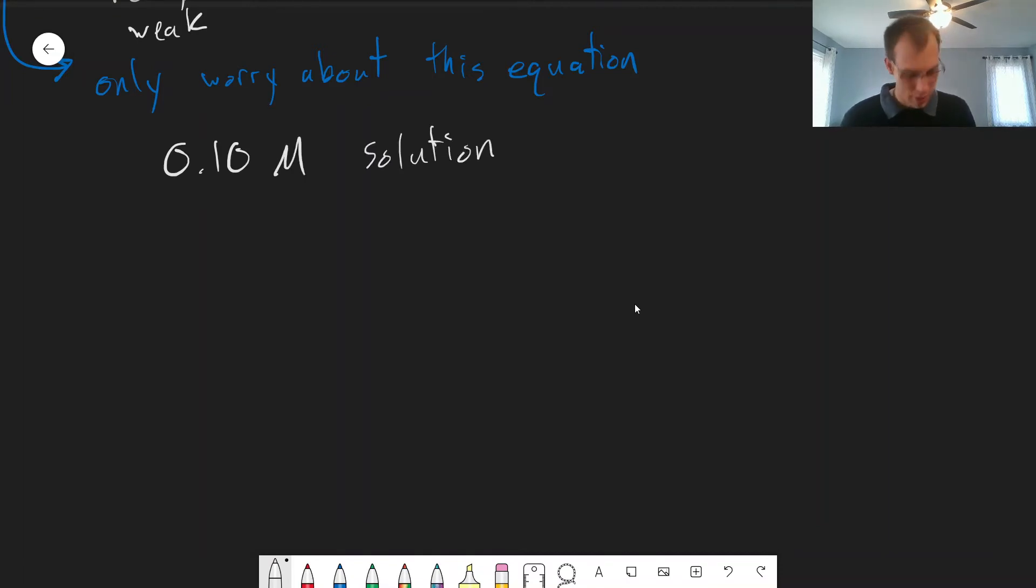So say we have a 0.1 molar solution. That means we can write out this equilibrium: H2A plus is in equilibrium with H plus plus HA. We can write out an ICE table, and we start with zero of these. We lose X, we gain X, and we get 0.1 minus X, X and X at equilibrium. And we can plug this into our KA expression.